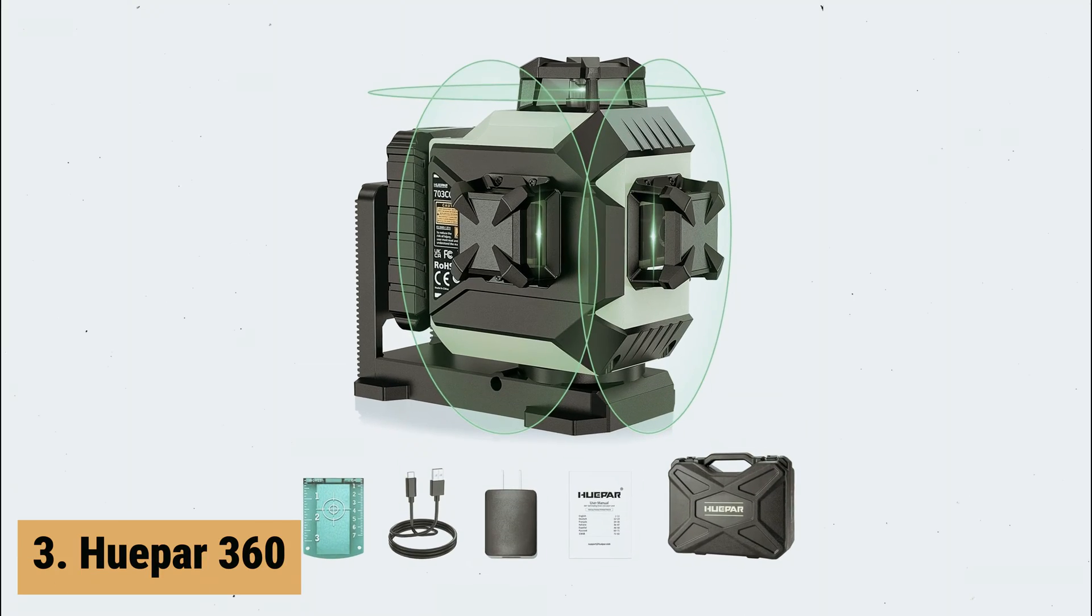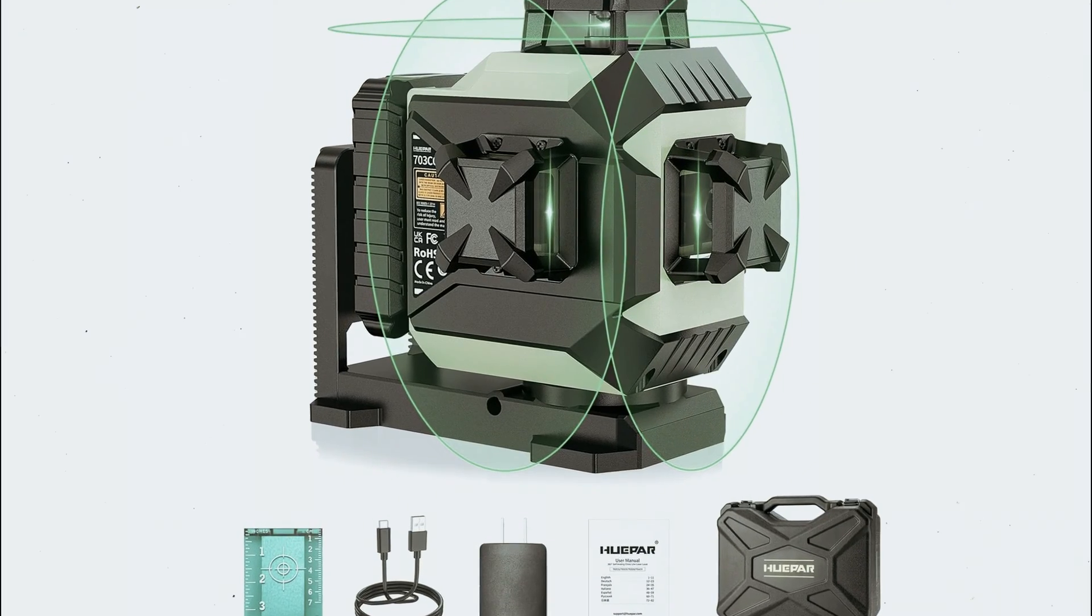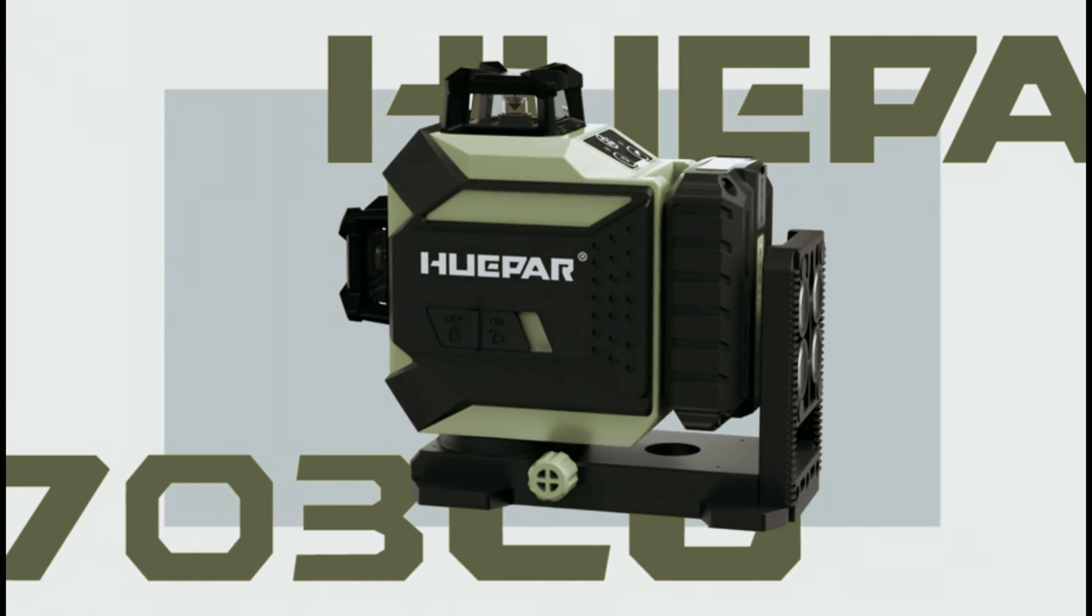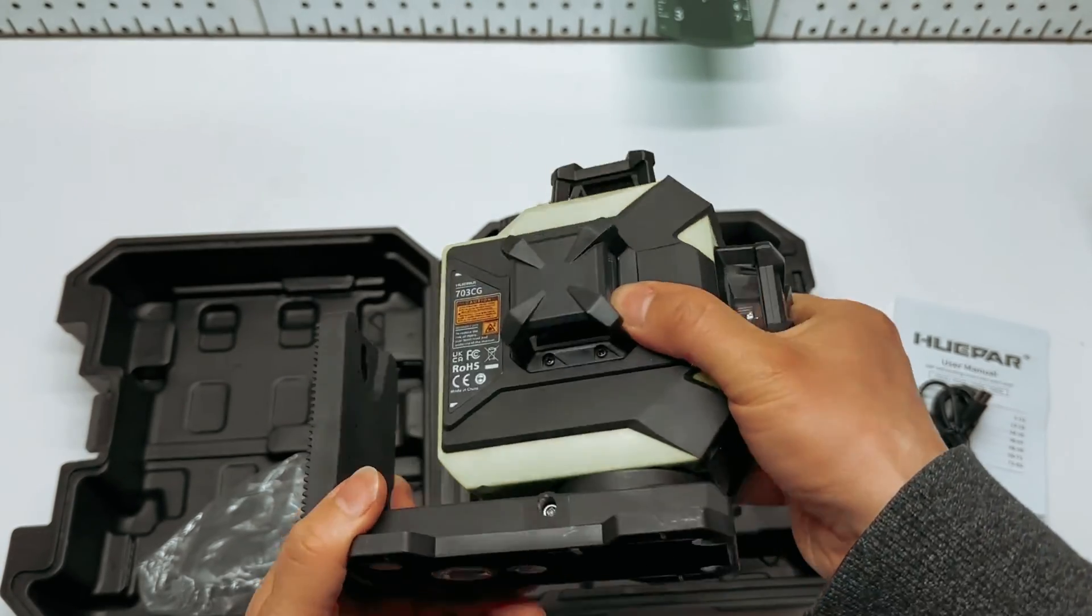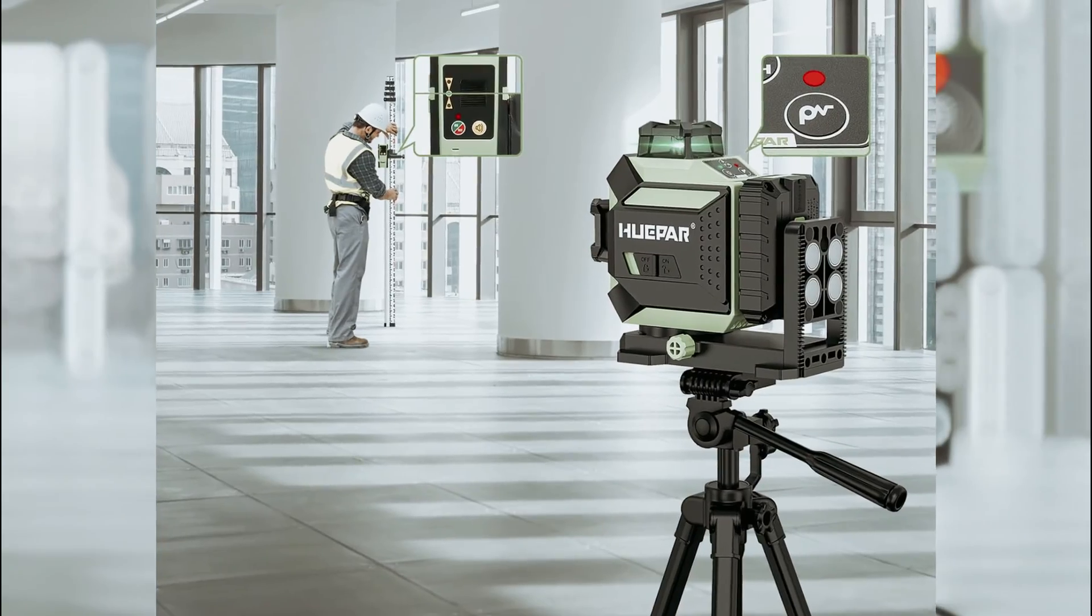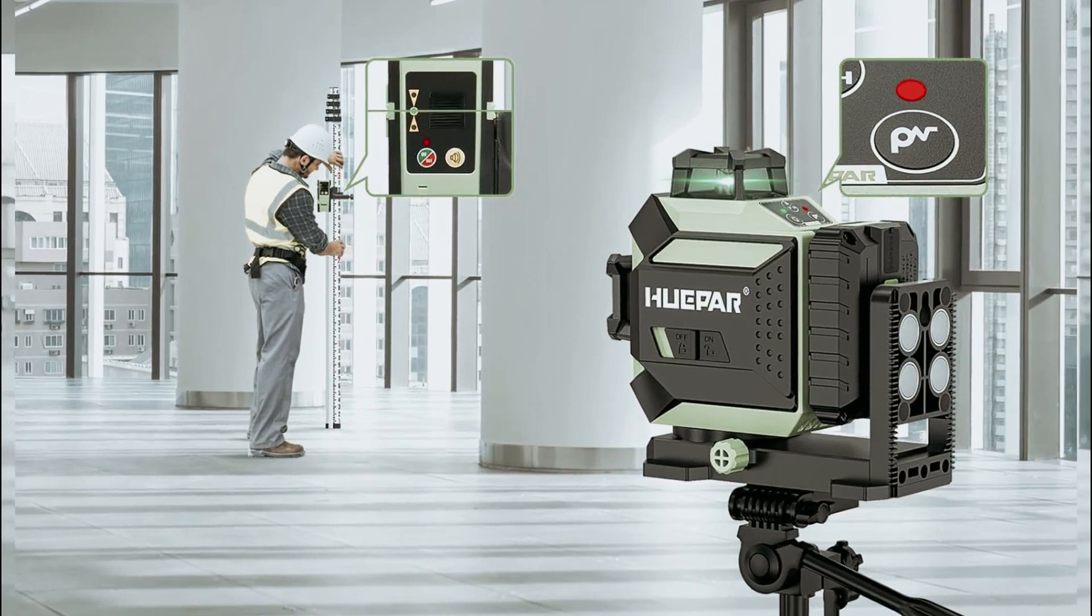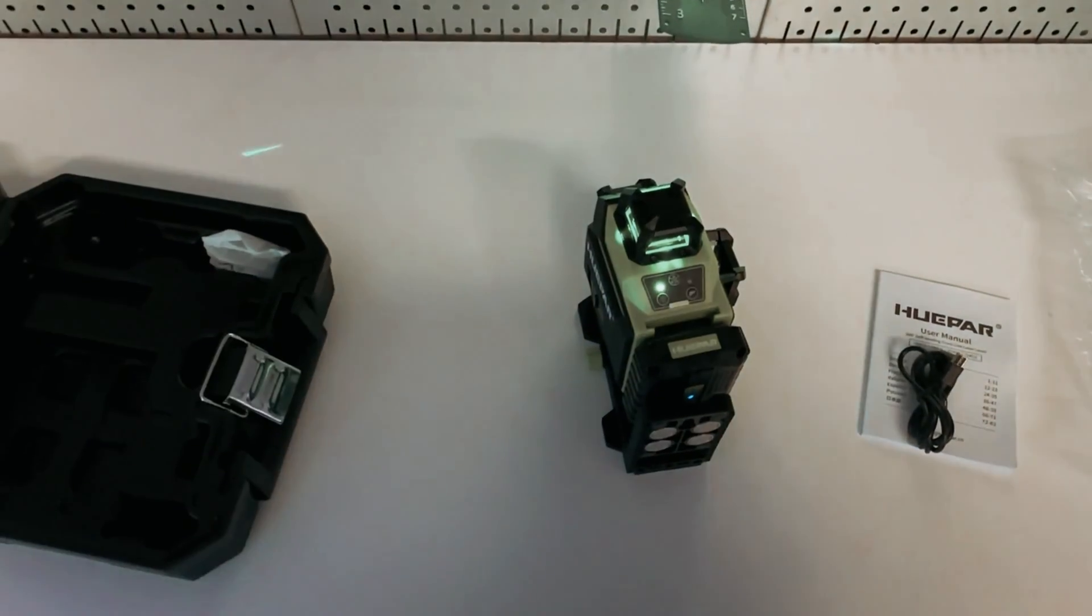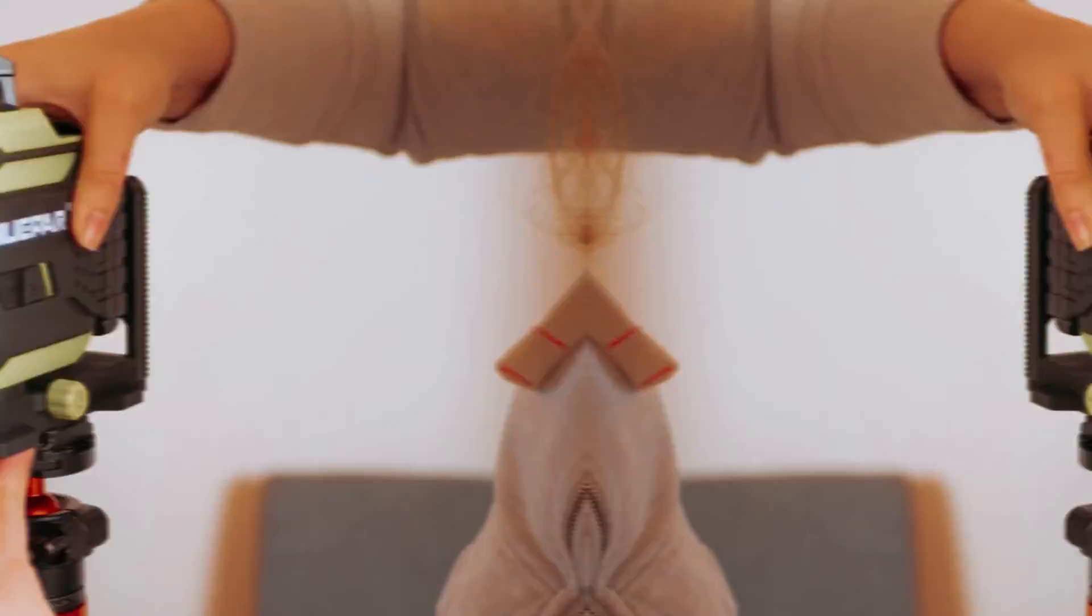At number 3 we have HUEPAR 360. The HUEPAR 360 Laser Level is a powerful and versatile tool that is perfect for any project requiring precise leveling and alignment. This laser level boasts a 360-degree horizontal and vertical coverage, providing 12 laser lines for accurate measurements. One of the standout features of this laser level is its self-leveling function, which ensures that the laser lines are always straight and level, even on uneven surfaces.